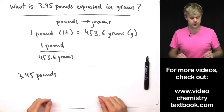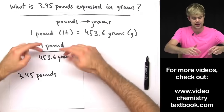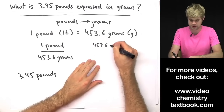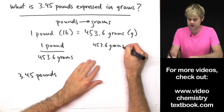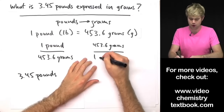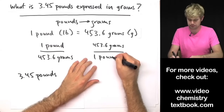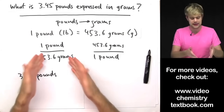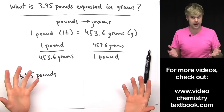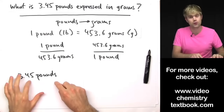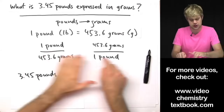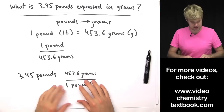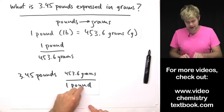The other conversion factor we're going to write is just the reciprocal — we flip it. So 453.6 grams goes on the top of the fraction and we divide it by one pound. So two conversion factors can be written from this statement. Either one of them is correct, but only one of them is what we want to be using here — we're just going to use one of these.